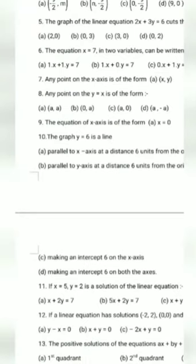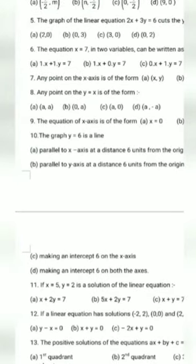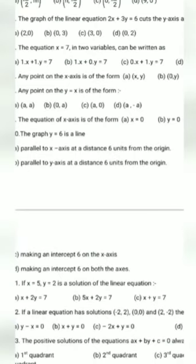Any point on the line y equal to x is of the form — option A. If you put x equal to a, then y is equal to a. The rest of the points do not satisfy the equation.